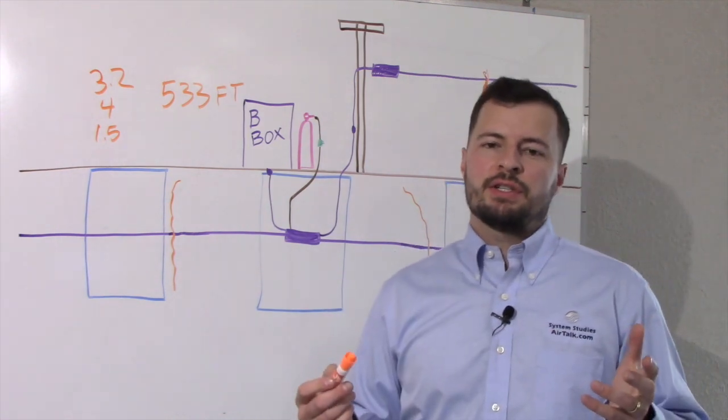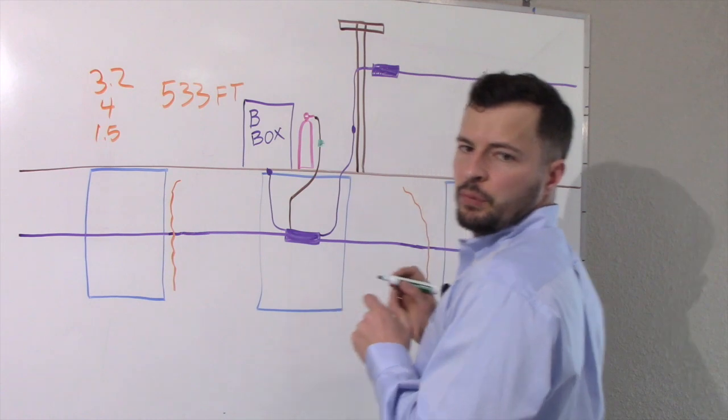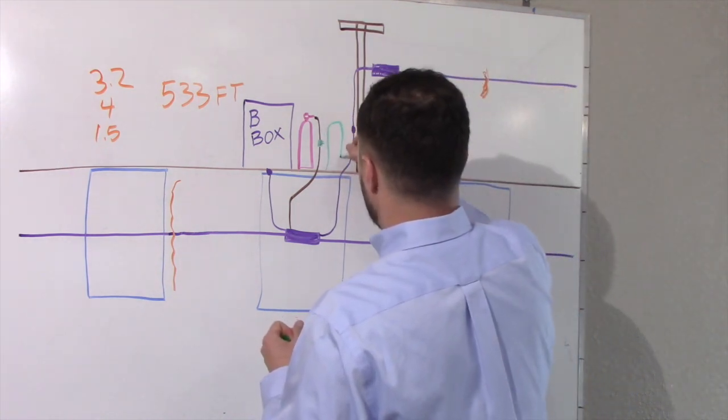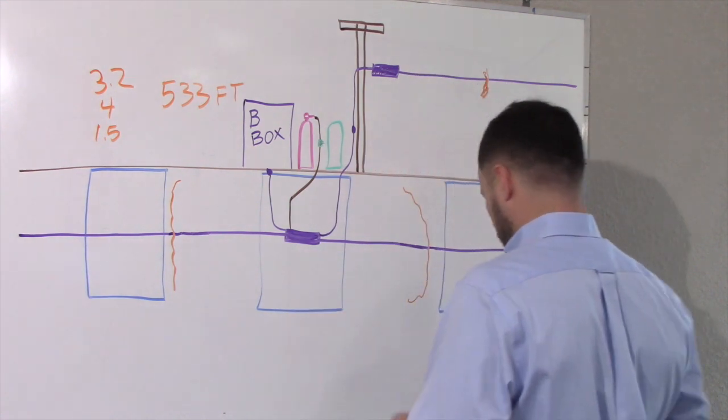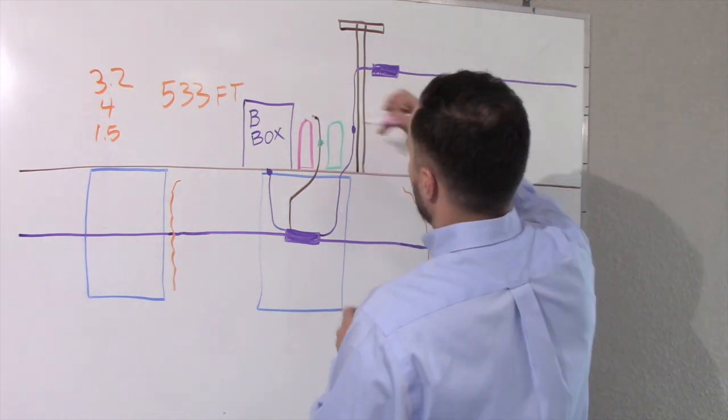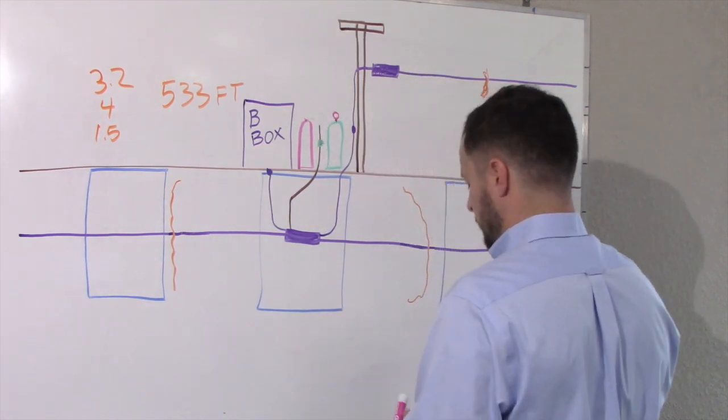Now that we have our area of search, it's time to use some tracer gas. We will replace the nitrogen tank with the tracer gas tank by taking the regulator off of the nitrogen tank and placing it onto our tracer gas tank along with the 3-8 inch tubing.